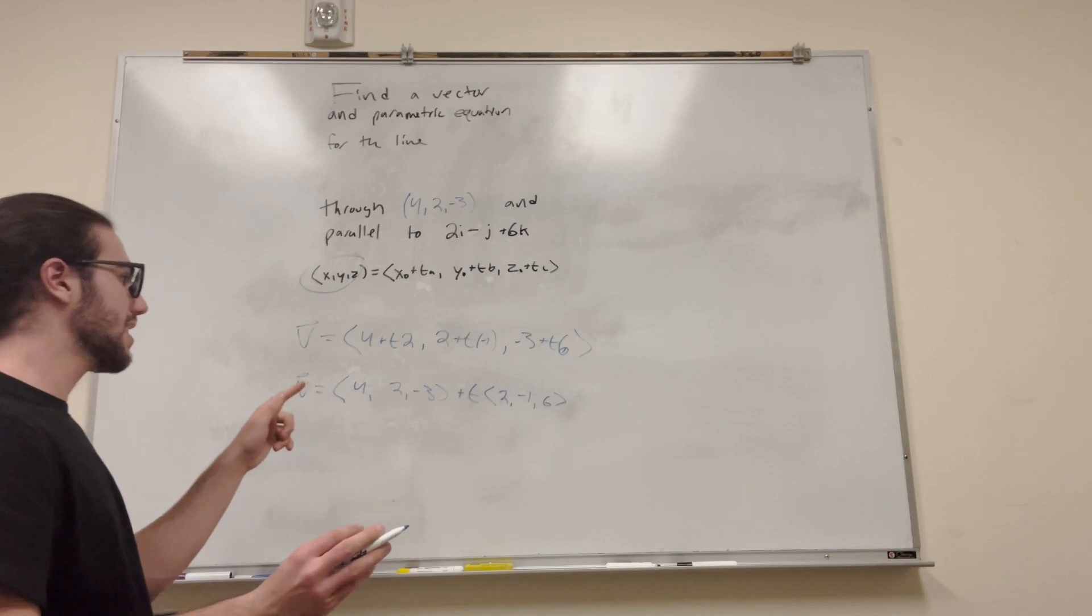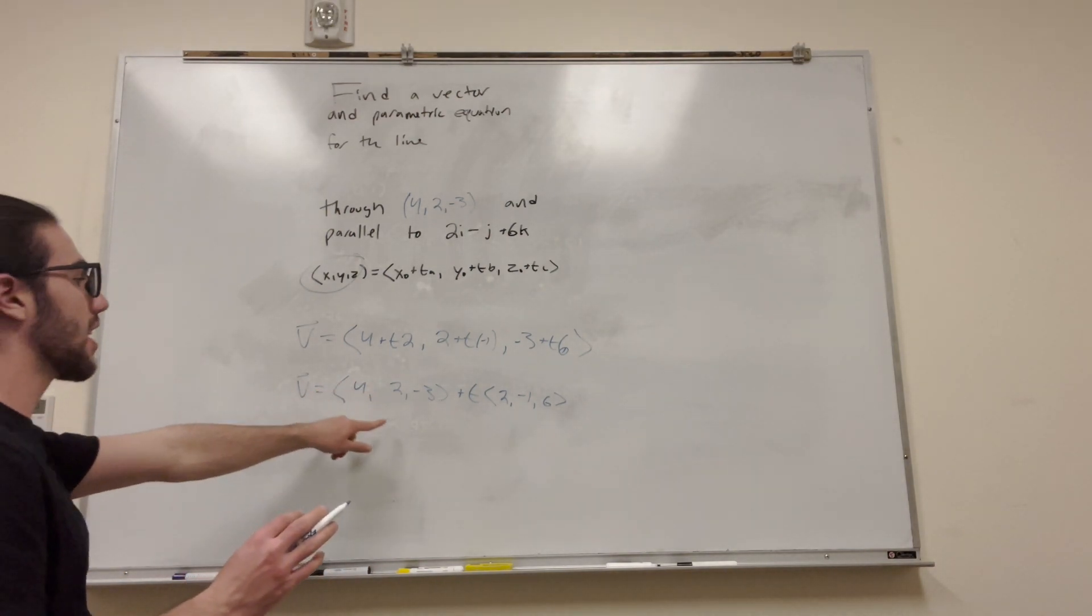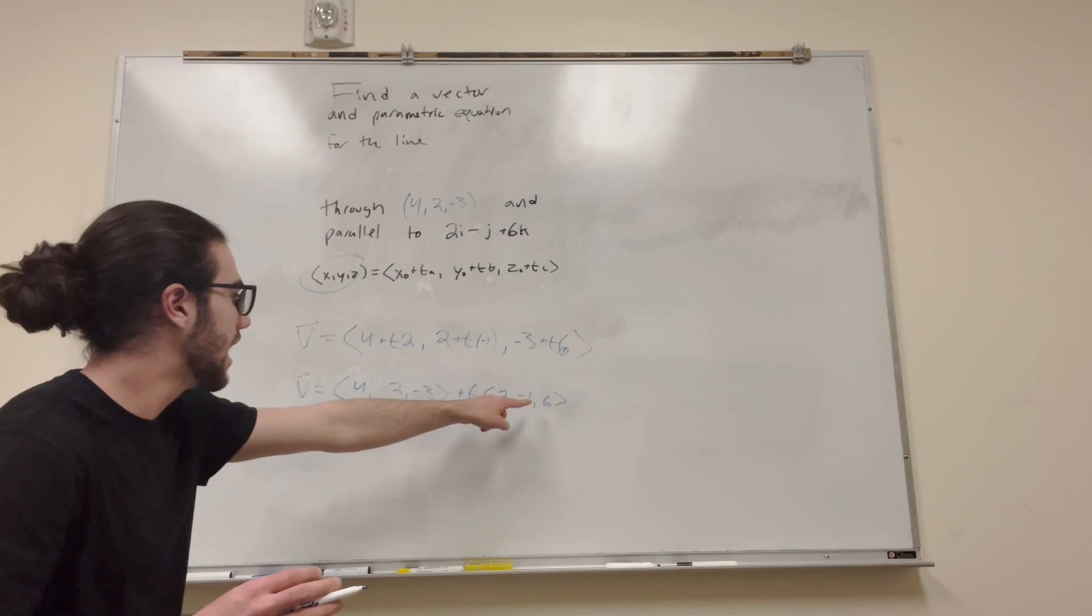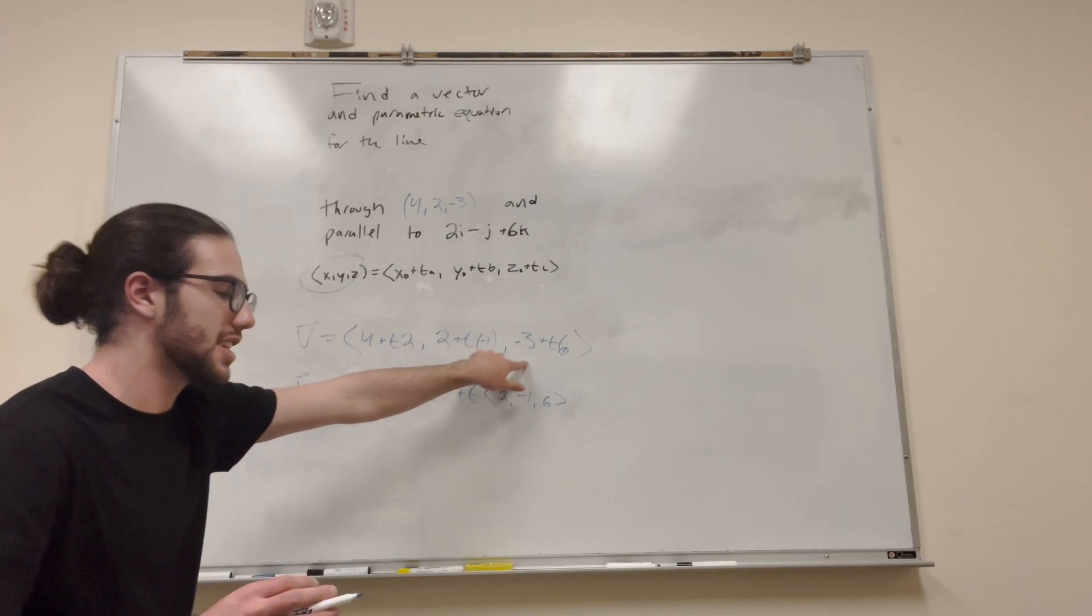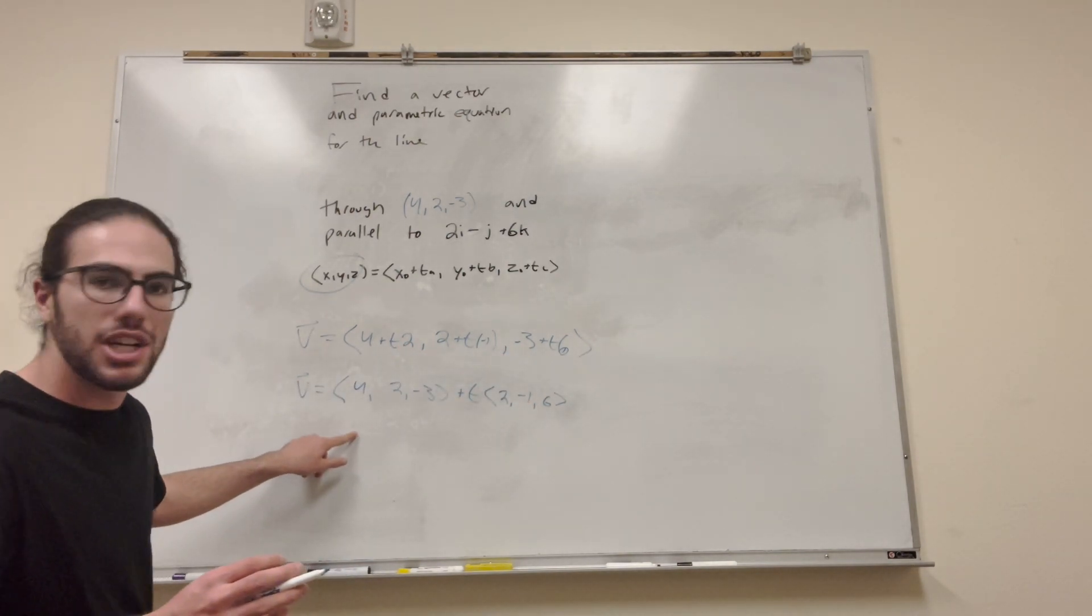Now, what is this? This actually is the exact same thing. If you go ahead and distribute the math, the T's will go in, and then it'll add, and it'll just give you this same form. But this is a vector equation right here.